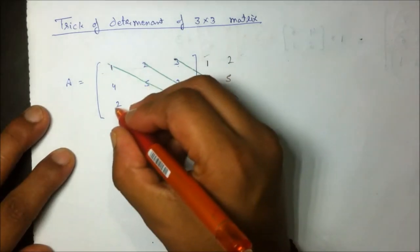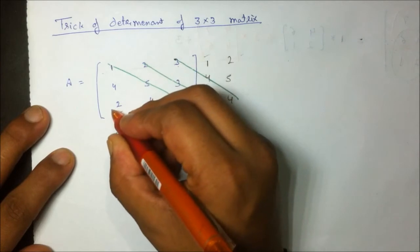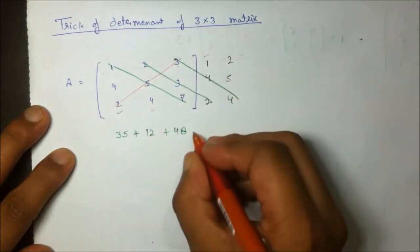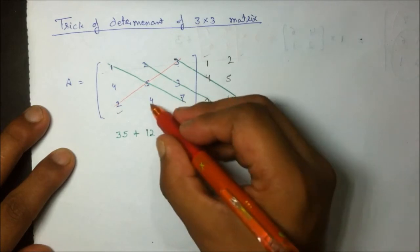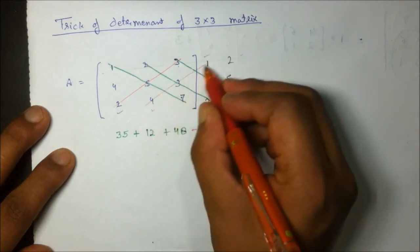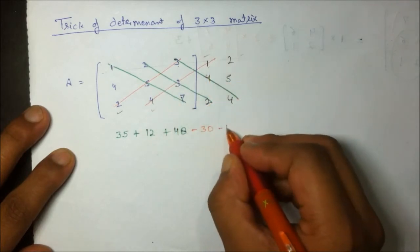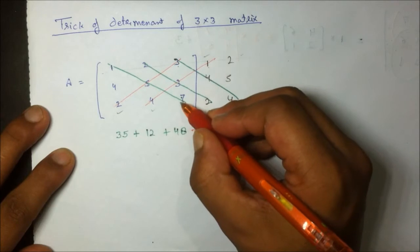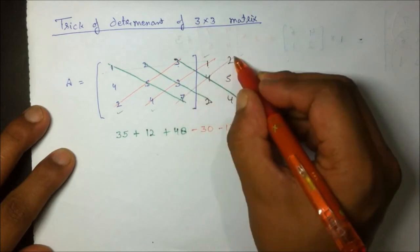For the lower diagonals, I subtract them. The first lower diagonal: 2×5×3 = 30, so minus 30. The second lower diagonal: 4×3×1 = 12, so minus 12.